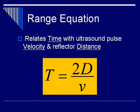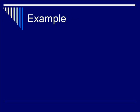The equation the machine uses to figure out the time and distance of the reflector is T equals 2 times D over V, where D is the distance of the reflector, V is the soft tissue velocity of sound, and T is the time of travel.